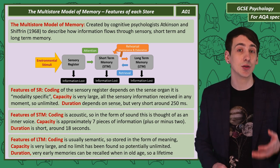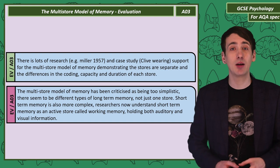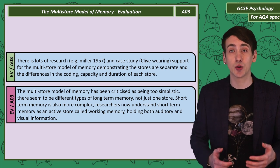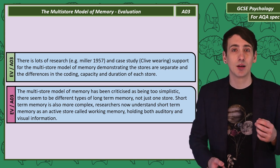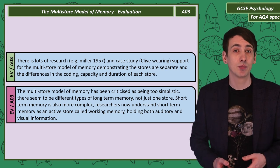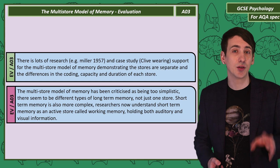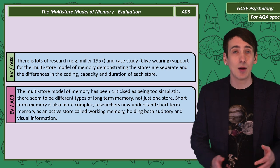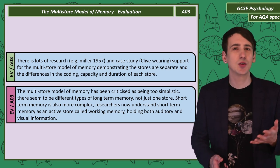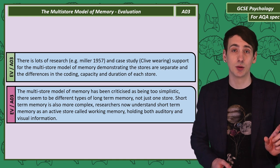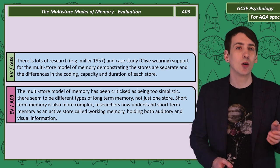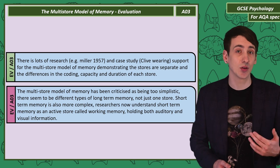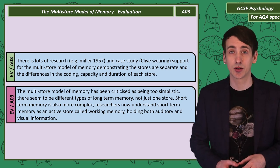Let's consider some evaluations of the multi-store model. There is a significant amount of evidence that the stores are separate — for example, the case study of Clive Wearing, who only has short-term memory and no long-term memory. This suggests the two stores are separate. Each store has also been investigated for its features; the seven plus or minus two figure was from a researcher called Miller. However, we can criticise the model as too simplistic. Long-term memory isn't just one store — there are three types. Short-term memory also seems too simplistic, and researchers now use the working memory model to explain how we process both auditory and visual information in short-term memory.